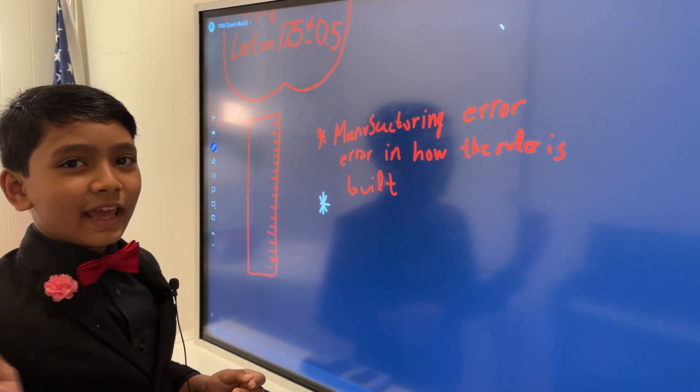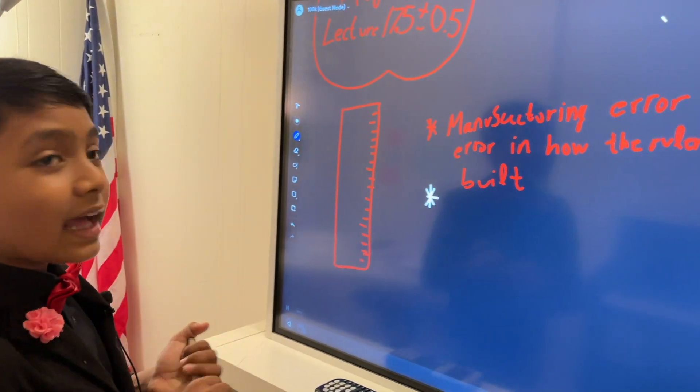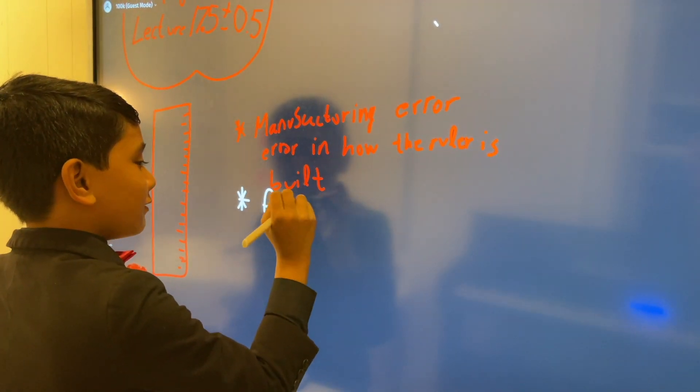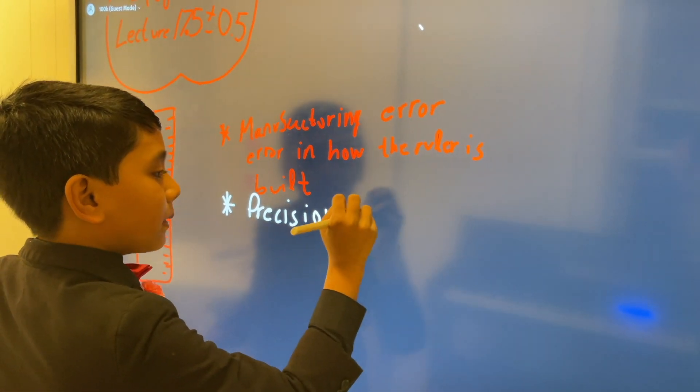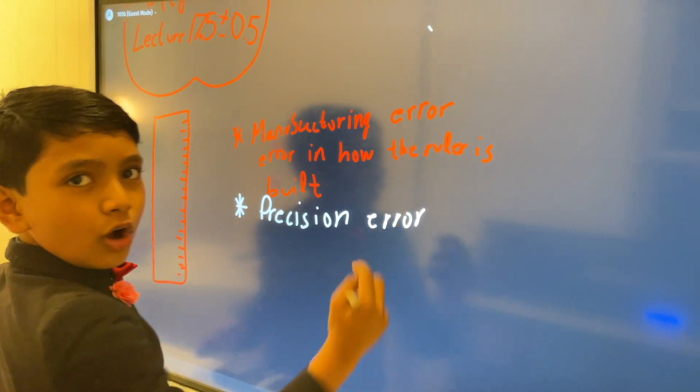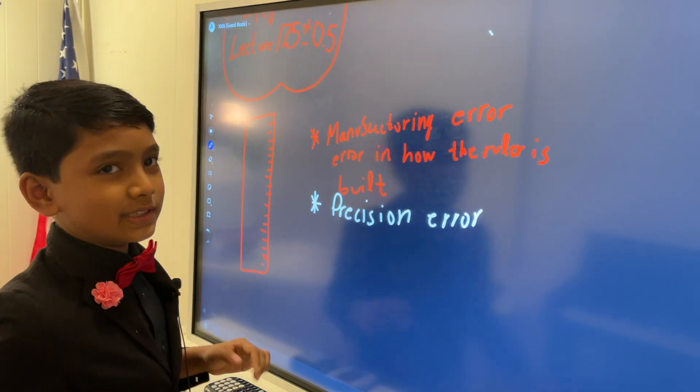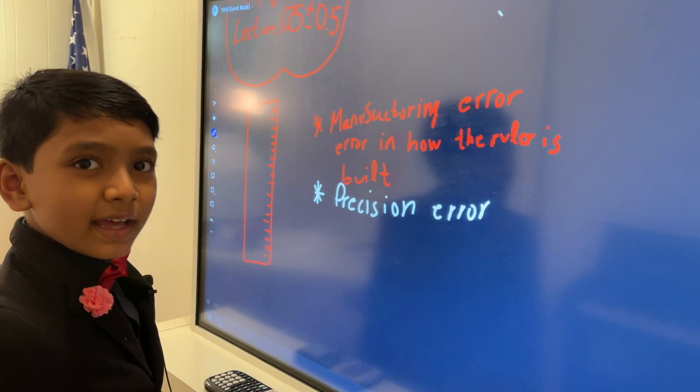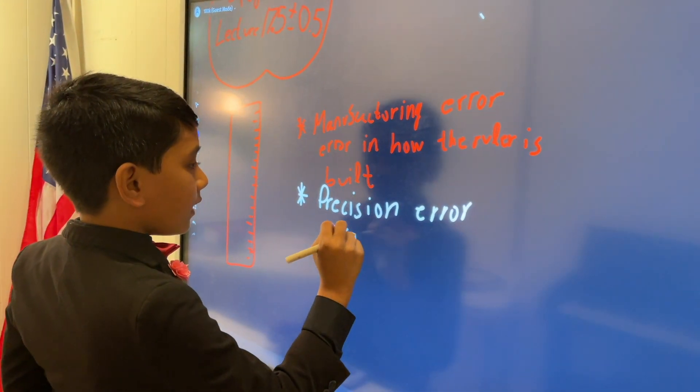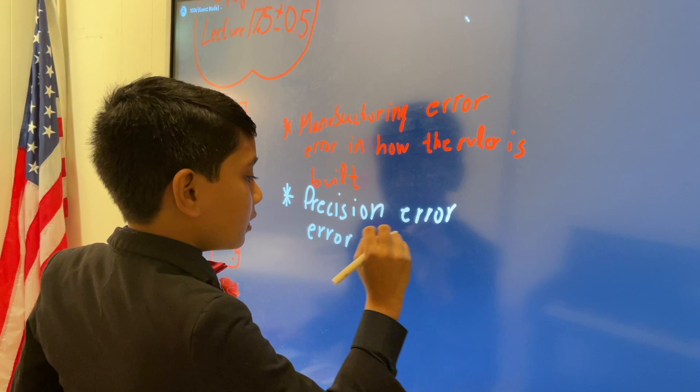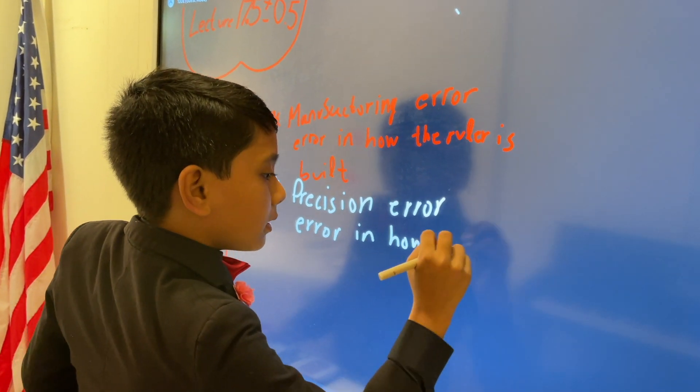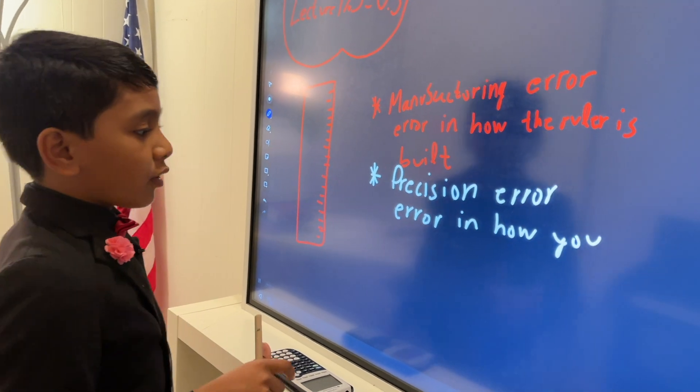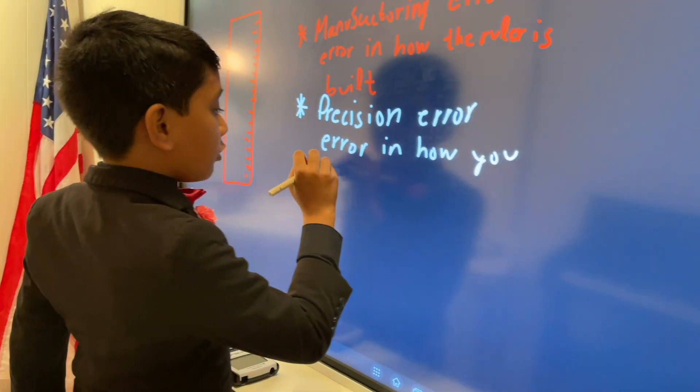So, the error made by your damn hand, well, that's another error. That's a precision error. Now, these aren't official names, but these are what you can call it. Just names. So, a precision error is an error in how you measure. Because you can't always align that zero up perfectly. An error in how you measure.